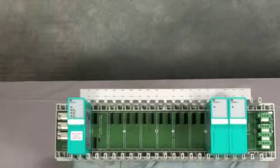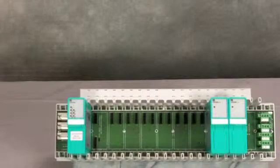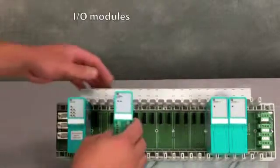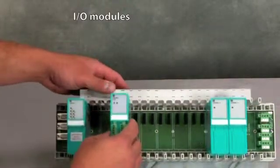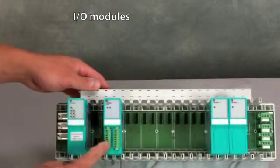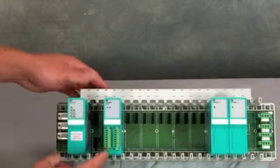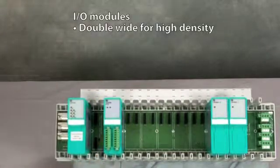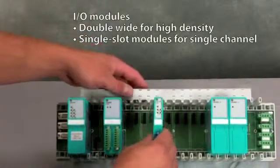The last part of the remote I.O. system is going to be your I.O. modules. The I.O. modules just simply plug into the backplane. And you can see here we have a double wide module. This is for high density, in this case four channel thermocouple inputs. And we also have single slot modules.